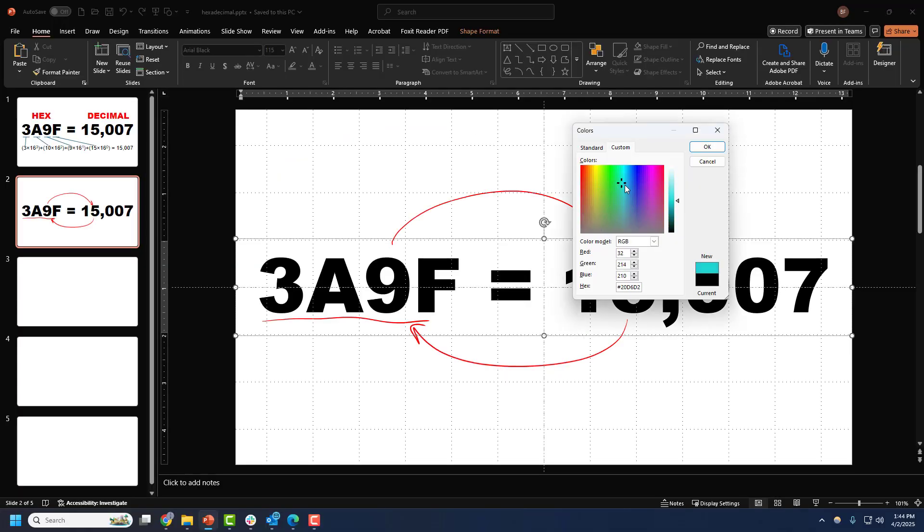Now if you have ever encountered hexadecimal numbers before outside of a programming context, it has probably been in something like this, a color picker where you can select or enter RGB, red, green, and blue values for the color of each pixel, where each number here is between 0 and 255, but then you can also select or enter a hex value for the color, which is this six digit string that can consist of either numbers or letters, and that is what we're going to explain in this video.